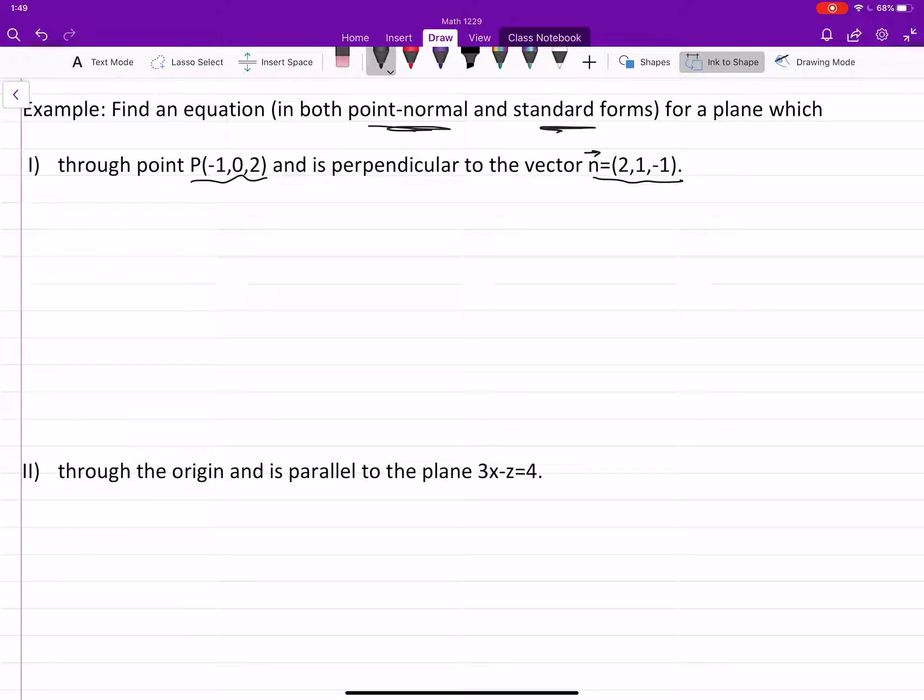So then you can write point-normal form. Point-normal form is n·(x-p) = 0. So it will be (2, 1, -1)·[(x, y, z) - (-1, 0, 2)] = 0. That is the point-normal form for the plane.